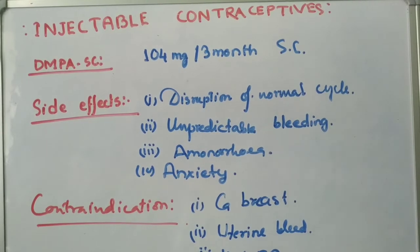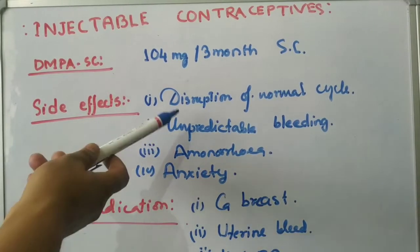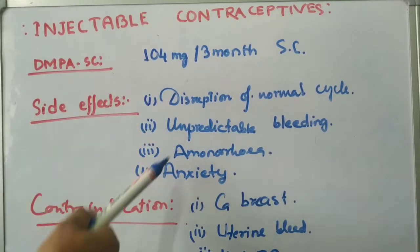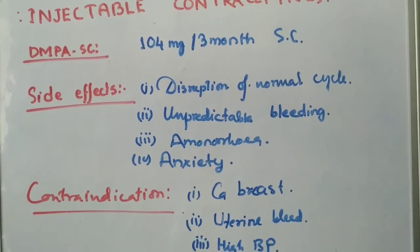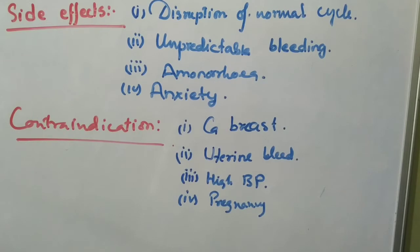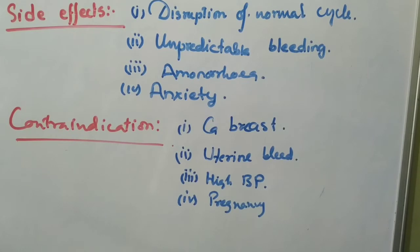Side effects of progestogen-only injectable contraceptives: disruption of the normal menstruation cycle, unpredictable bleeding, amenorrhea, and anxiety. Contraindications: carcinoma of the breast, undiagnosed uterine bleeding, and high blood pressure — in these cases it should not be given.